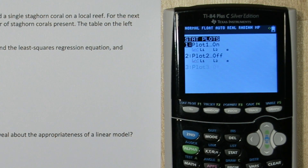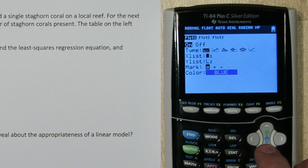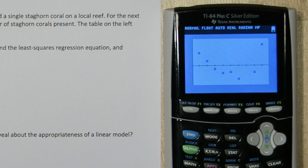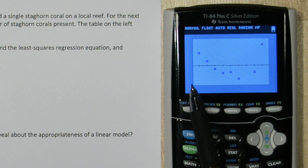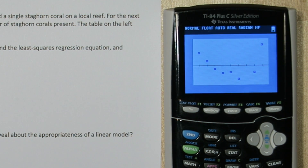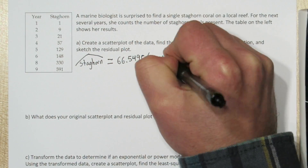Let's make our residual plot. If you press 2nd and y equals and go back to your stat plot menu and go back to plot 1, all we need to do is change our y list to list 4. This will keep our original explanatory variable as our x axis, and it will make our response variable, the vertical axis, our residuals. So I'll press zoom and 9, and here's our residual plot. We can see this U or W shaped pattern. On this residual plot, the horizontal axis is our model. So what that means is in the beginning years our model tends to under predict the number of staghorn corals. Then in the middle years it over predicted them. And finally at the end it was under predicting them again. There's a pattern here, and what the pattern suggests is a linear model is not the most appropriate. So let's copy down our least squares regression equation and sketch the residual plot.